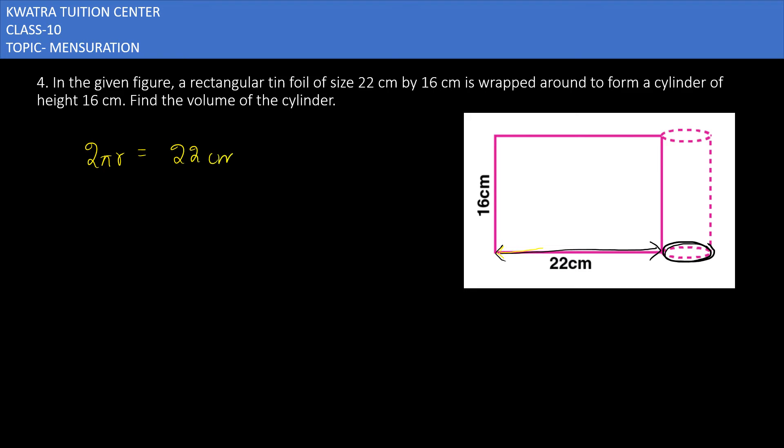It will be 22 centimeter. Then I can easily find the value of r. π is 22 by 7, r will be as it is. Then you have 22, 22, and 22 can be cancelled. r will give you 7 over 2 centimeter radius.